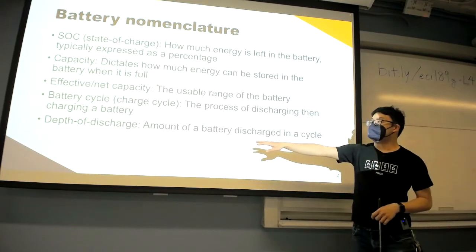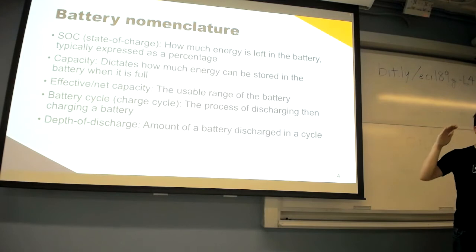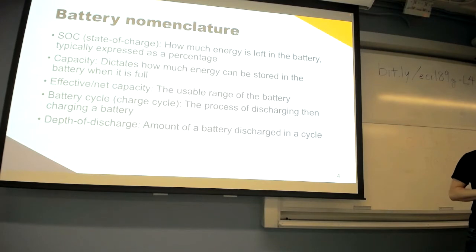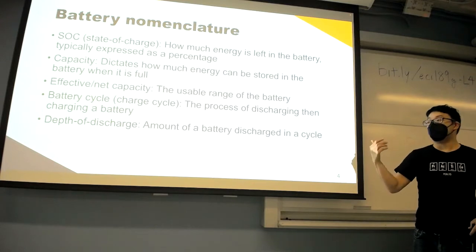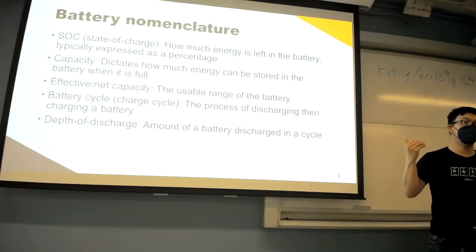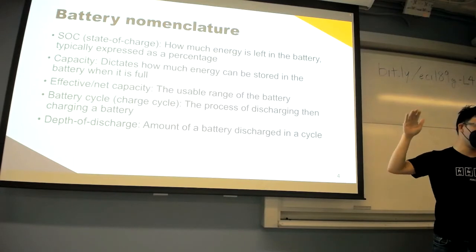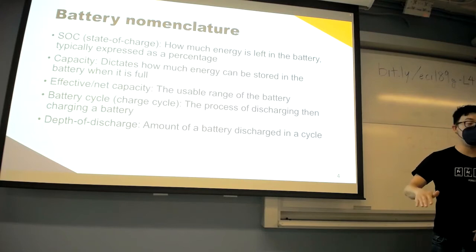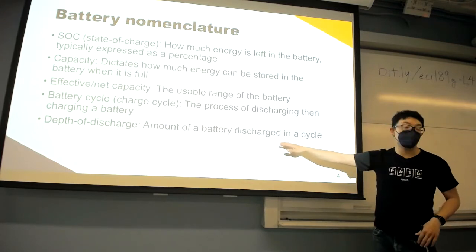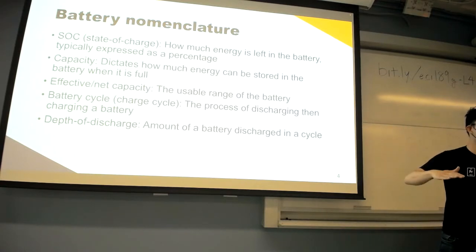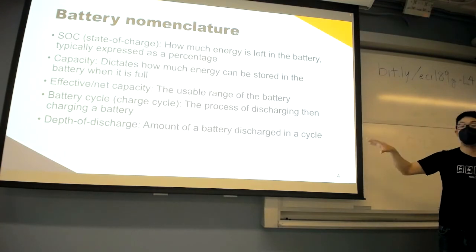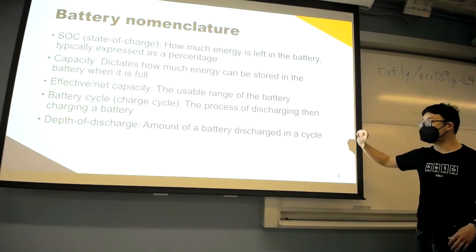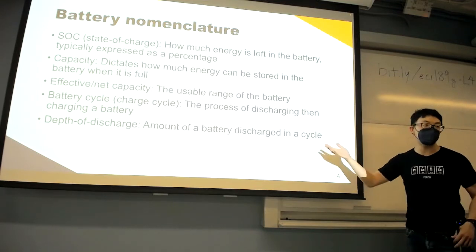The depth of discharge refers to how far down in the state of charge you go within a single battery cycle. If you're constantly doing a large depth of discharge — say going from 100% down to 5 or 10% — versus a moderate depth of discharge going from 100% down to 50%, all of these things can have different effects on battery lifetime and efficiency.